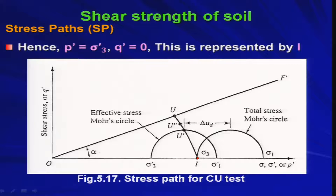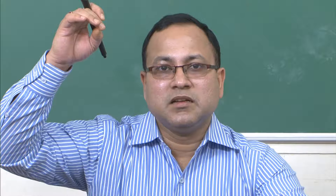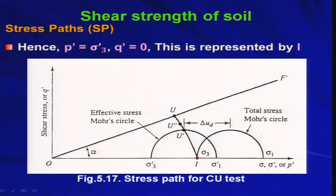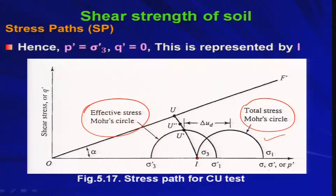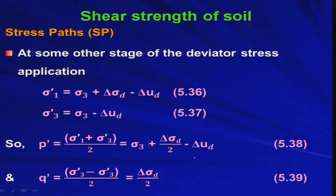Now we begin shearing the sample by applying the deviator stress. Since we are now in the undrained shearing stage of the CU test, there will be two Mohr circles — one for total stress and one for effective stress. The test starts from point I. As we progress and apply the deviator stress, the stress path begins to move. Let us see how.